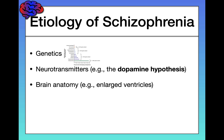We also see differences in brain anatomy with people who have schizophrenia — for example, enlarged ventricles compared to typical others. But also environmental factors such as events during pregnancy play a role. For example, if the mother has extreme difficulty during labor, the child has an increased risk for developing schizophrenia. The mother getting the flu in the first trimester of pregnancy is associated as well.